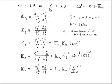The equilibrium constant, as we noted last time, is formally dimensionless because it is entirely composed of a ratio of activities to their stoichiometric coefficients.